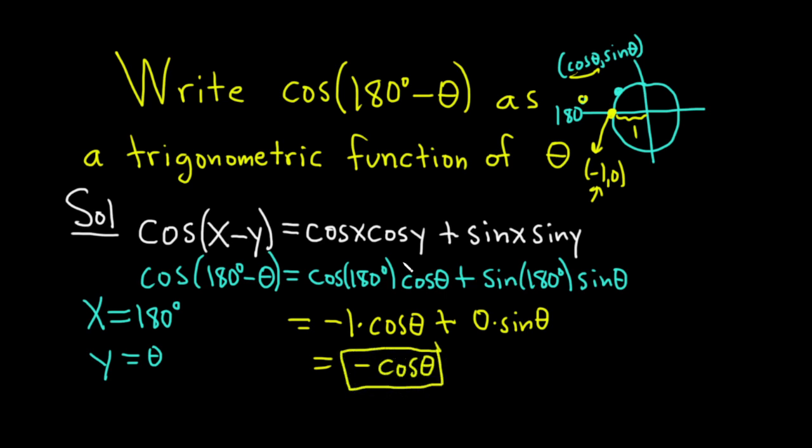And that would be a trigonometric function of theta, so we've accomplished our goal in this problem, right? Because this piece here is 0 because 0 times a number is 0. I hope this has been helpful. Good luck.